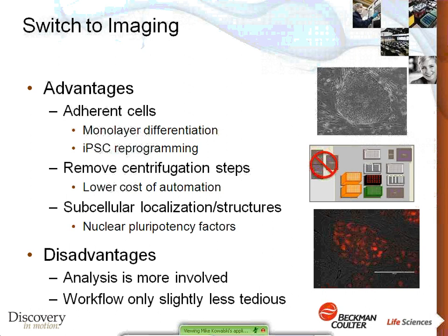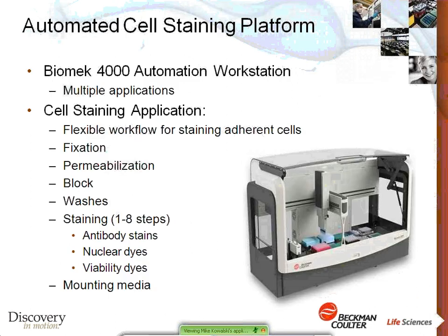Disadvantages of imaging include slightly more involved analysis and a workflow that still has many buffer exchanges and antibody changes. That's why we automated this process using our Biomek 4000 automation workstation — a flexible platform for our cell staining application, designed to automate all steps: fixation, permeabilization, blocking, multiple washes, multiple staining steps — whether antibodies, nuclear dyes, or viability dyes — and even adding mounting media at the end. The software is designed to be as easy and flexible as possible. You select a sample pattern, choose staining permutations, fix or permeabilize or skip these steps for live staining, choose one to eight staining steps, and set your final processing in PBS or mounting media.